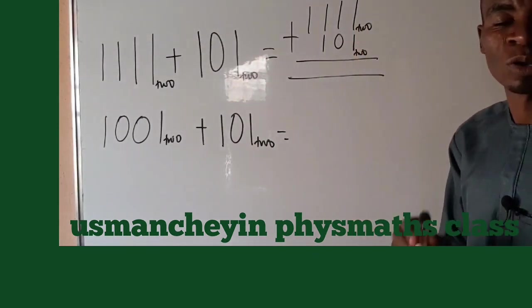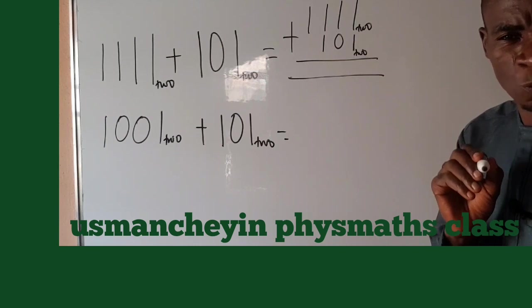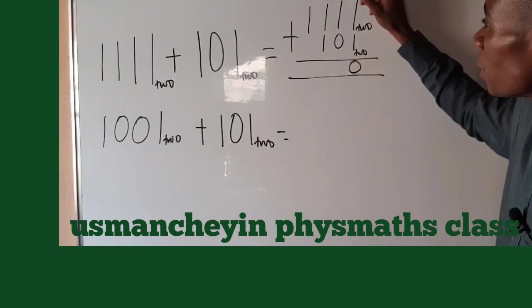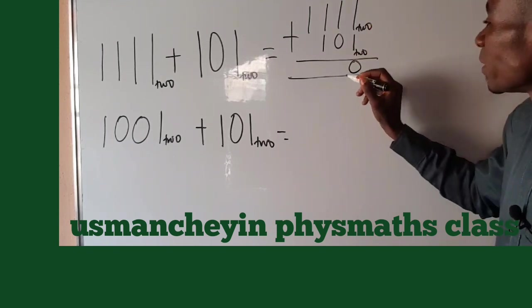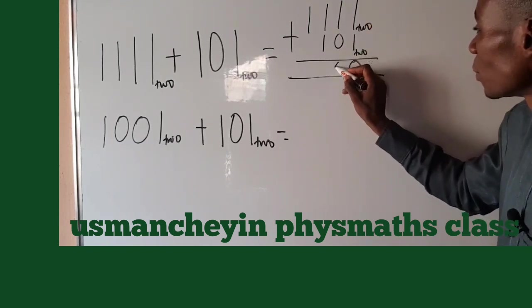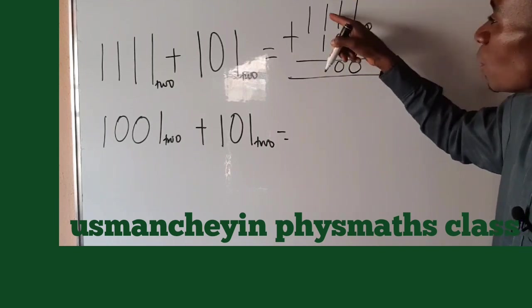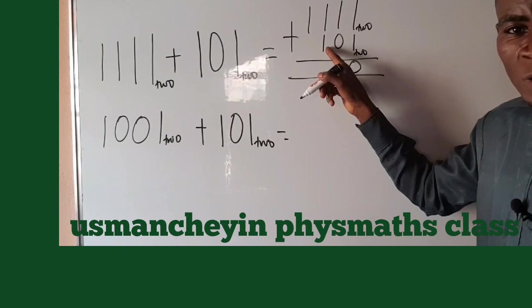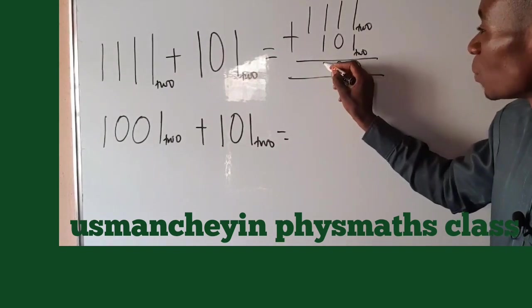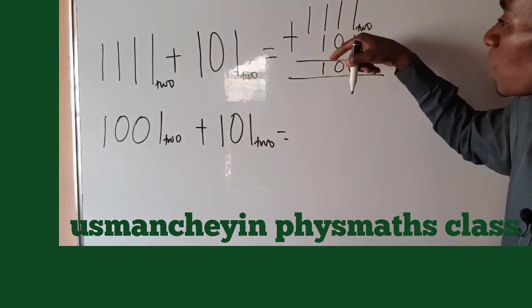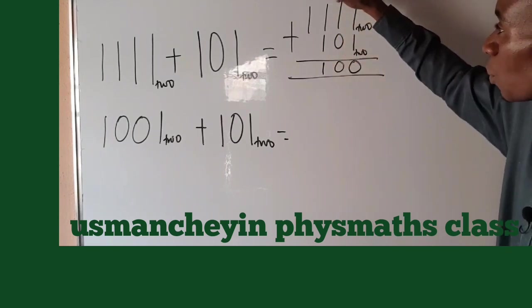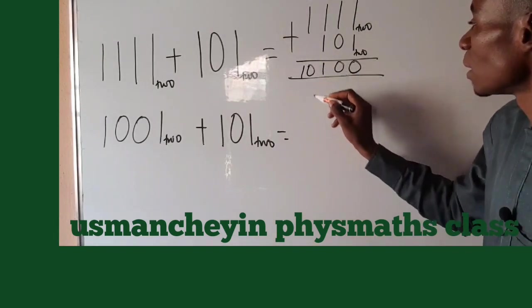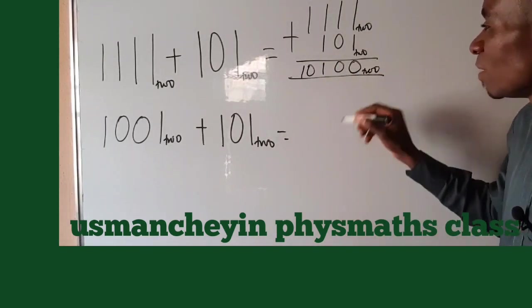First, the first one here. So what you do is just one plus one is equal to 10₂. You write zero, you carry one. One plus one is 10₂ plus zero is 10₂. You write zero, you carry one. One plus one is 10₂ plus one. This time around, you write 11₂. So you write one, you carry one. One plus one is 10₂. So you write your final answer, 10110₂ in base two. That is the final answer for that question.